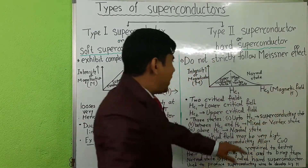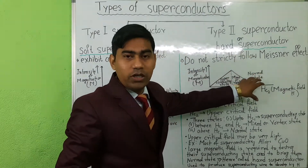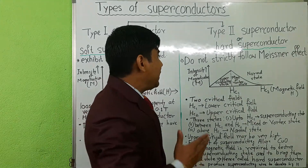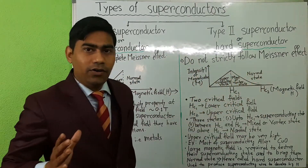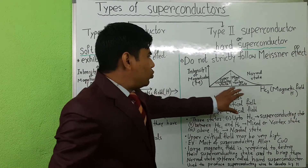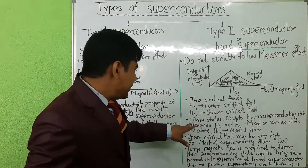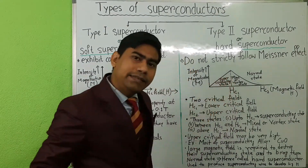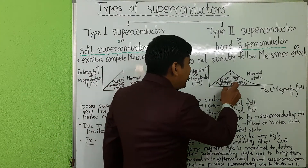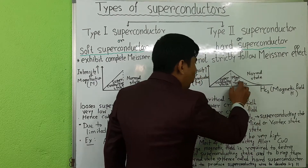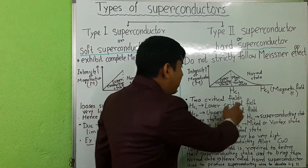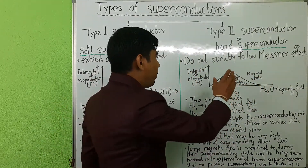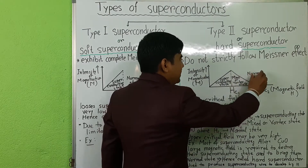Above Hc2, magnetic flux fully penetrates into the superconductor — that is, flux penetration is complete and the material is in the normal state. So in type 2 superconductors, there are three states: up to Hc1 is the superconducting state, between Hc1 and Hc2 is the mixed state or vortex state, and above Hc2 is the normal state.